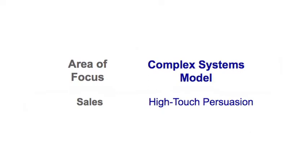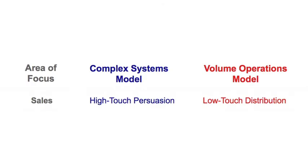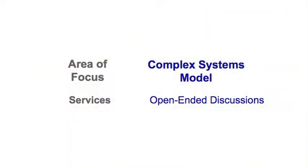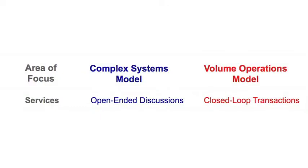Sales forces in the complex systems model involve very high-touch, persuasion-oriented dialogues in a consultative sales force, whereas you have very low-touch, transactional models for the consumer model. The same goes for services: in a complex systems model they're very open-ended dialogues — you're trying to discover new needs and potentially bid new projects. Whereas in the consumer model, they're very closed-loop transactions where you're trying to solve a question and get off the phone or off the web.